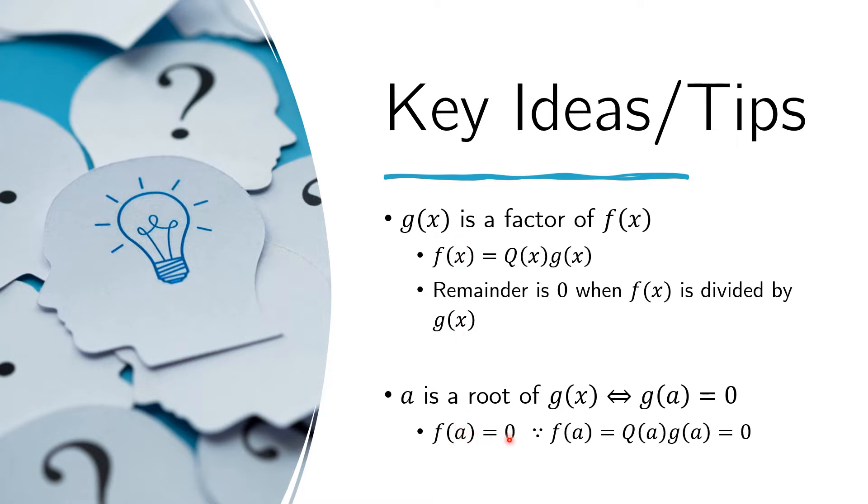And that's simply because if you substitute a here, you get Q of a times g of a, but because we already know that g of a is zero, then this whole expression here goes to zero.